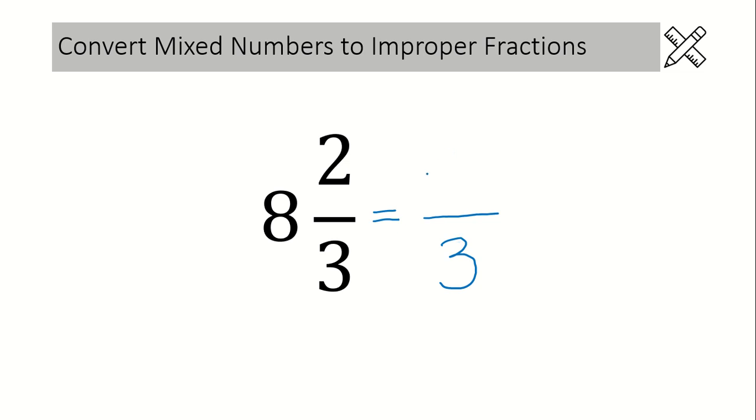Next we need to figure out what the numerator is. To do this you take the denominator in your mixed number and multiply it by the whole number. Next you would add the numerator. So in this example we would have 3 times 8 which is 24 and then we would add 2 to get 26.